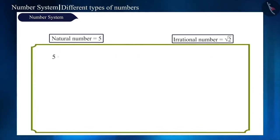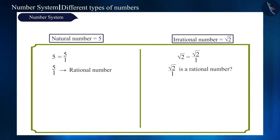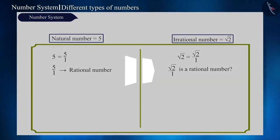Just as we can represent natural number 5 as a rational number by writing 5 by 1, can we also write root 2 as root 2 by 1 and say that it is a rational number? You can also pause the video to think about it.